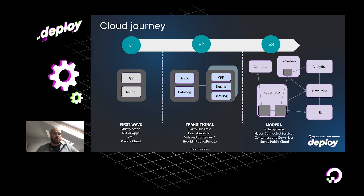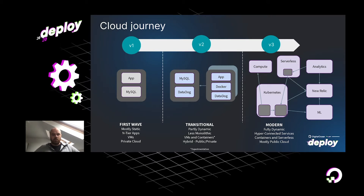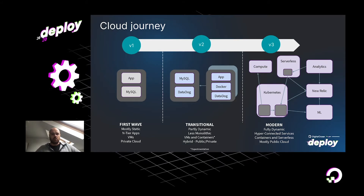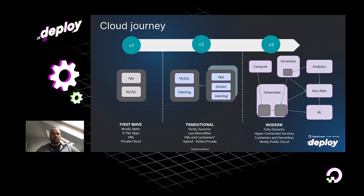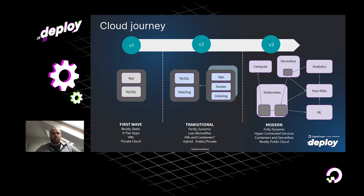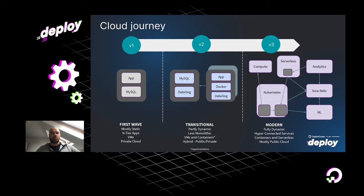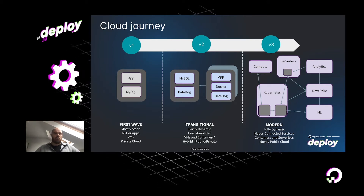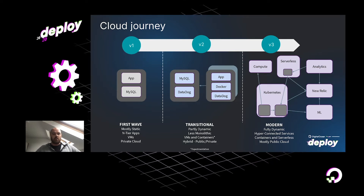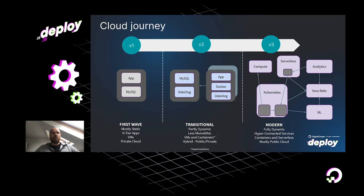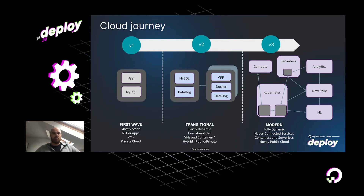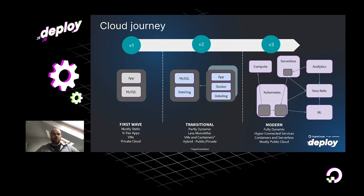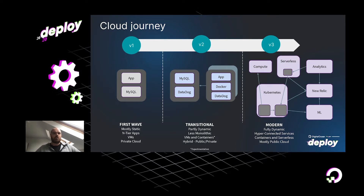Then you have people who have gone a little further, with a much more transitional style architecture. They're starting to take advantage of maybe a mixture of containers and VMs, probably using Docker or a hosted service in the specific cloud. They could be bringing in a hosted database or using their own database, and they would definitely be taking advantage of a monitoring SaaS style tool to understand how their systems are working in production.